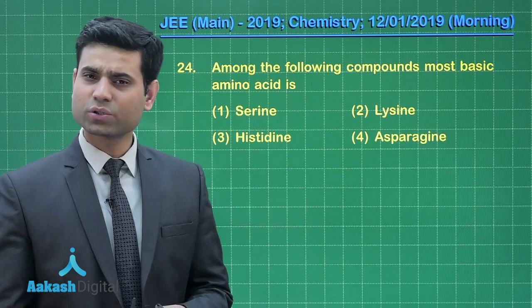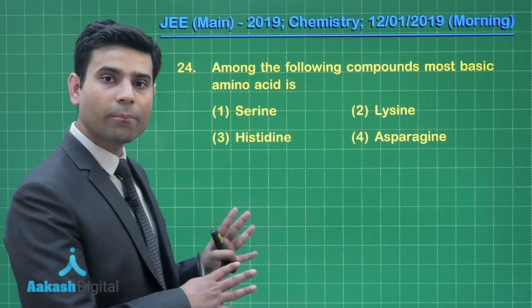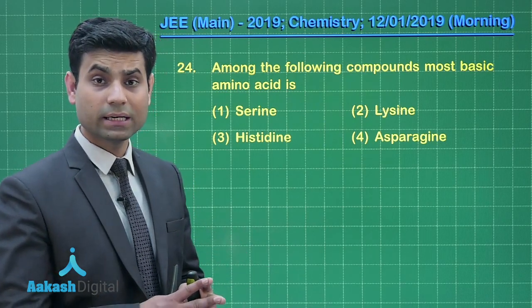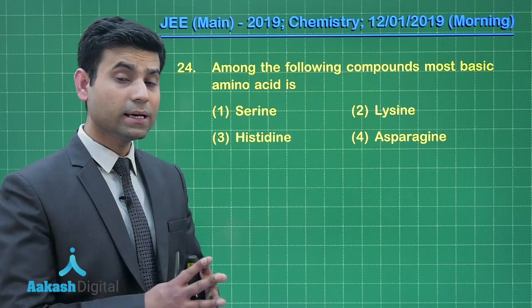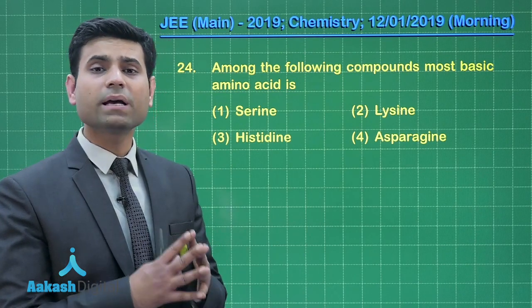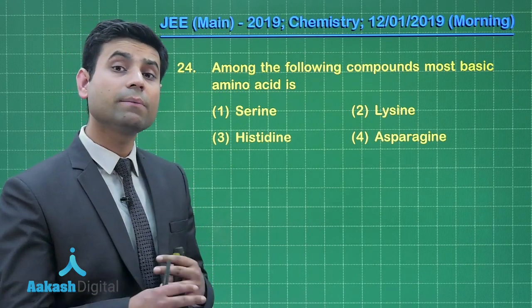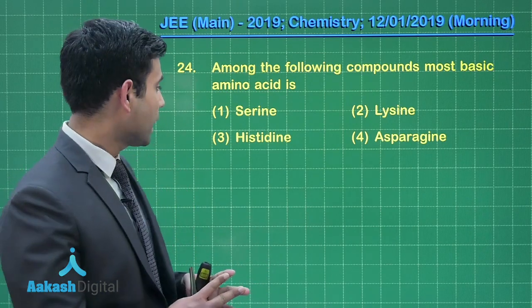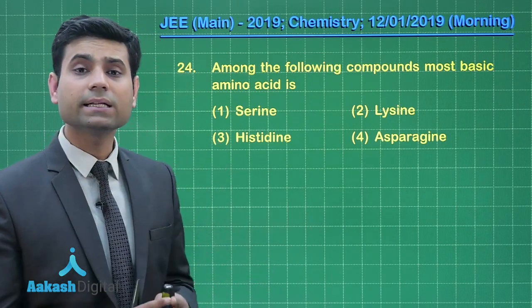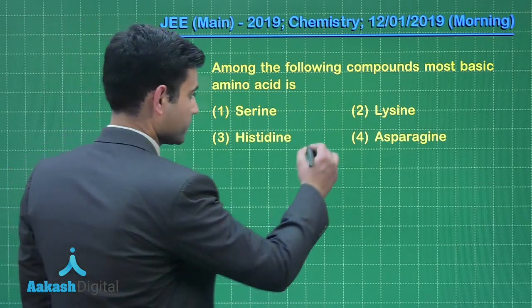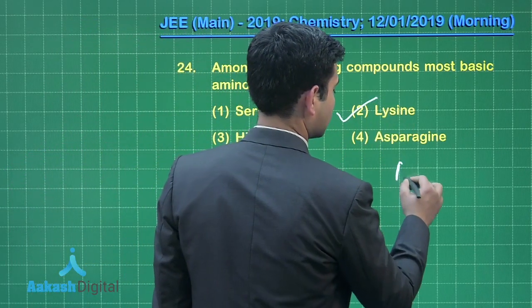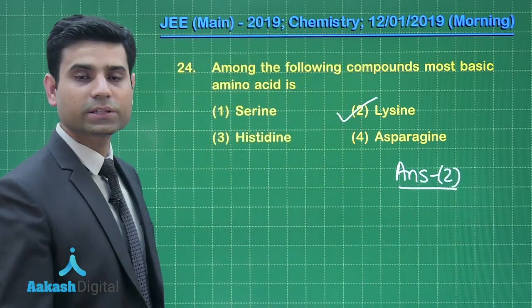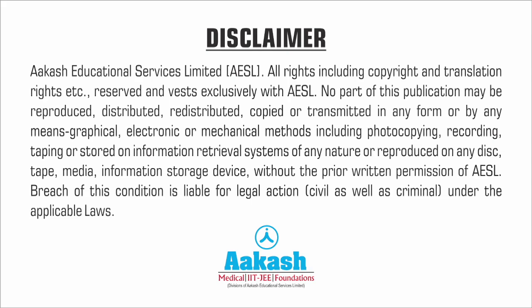Students, as we know, out of these four compounds the most basic compound will be lysine. It is a fact-based question. The basic character depends on the +R and +I effects, as well as the availability of a lone pair on the nitrogen atom in case of amino acids. So out of these options the correct answer will be option 2. Now let us move to the next question.